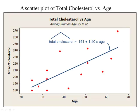Let's think back to our cholesterol data. The regression equation is: predicted total cholesterol equals 151 plus 1.40 times age, for women between 25 and 65 years old. The intercept term is 151, meaning the model predicts a total cholesterol of 151 when age equals zero. While zero could theoretically represent a newborn, we have no one in our dataset even close to zero — the youngest women are 25. So the regression model was calculated based on that data, and it doesn't make sense to interpret the intercept term here.